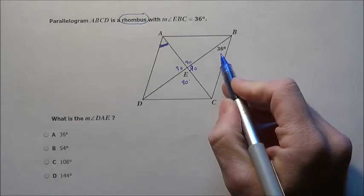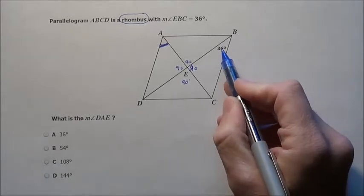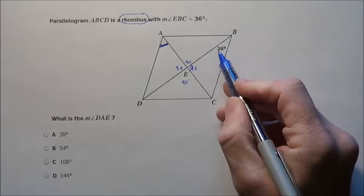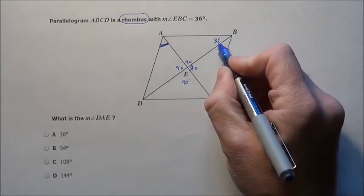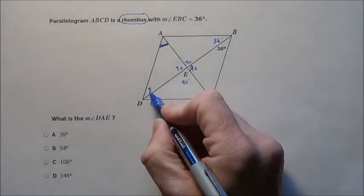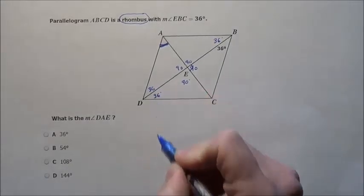I also know the other interesting thing is that it bisects the angles right here. So if this is 36 on this side, this is 36 on this side. And down here would be 36 and 36.